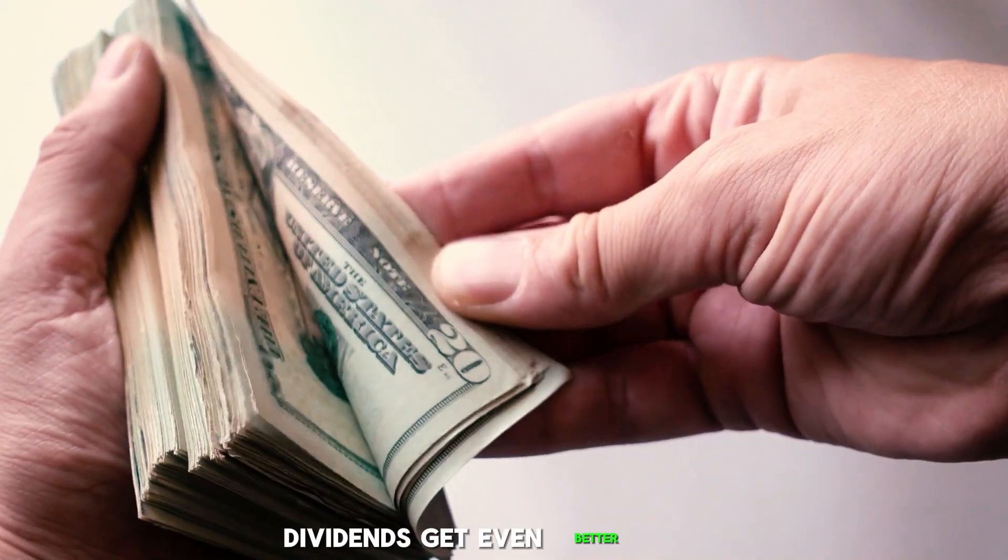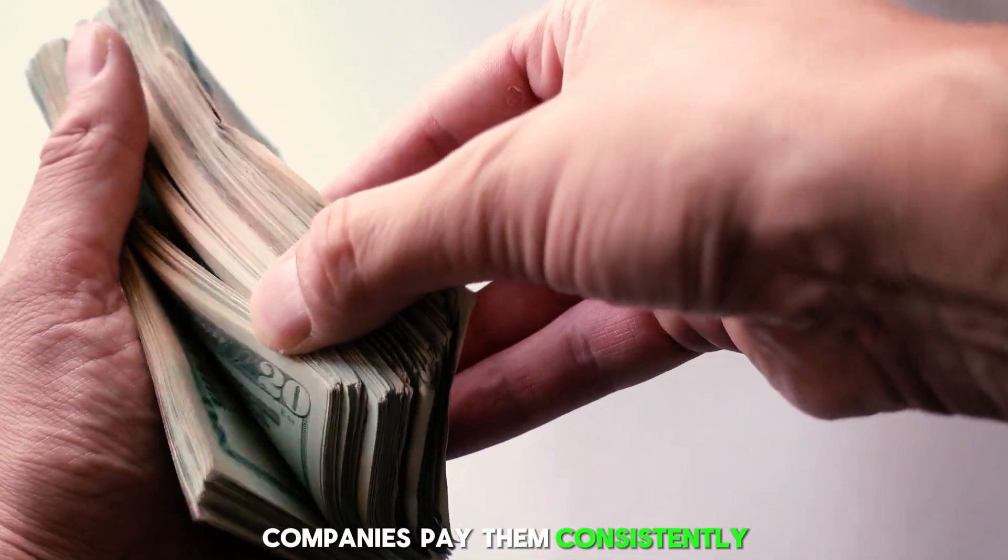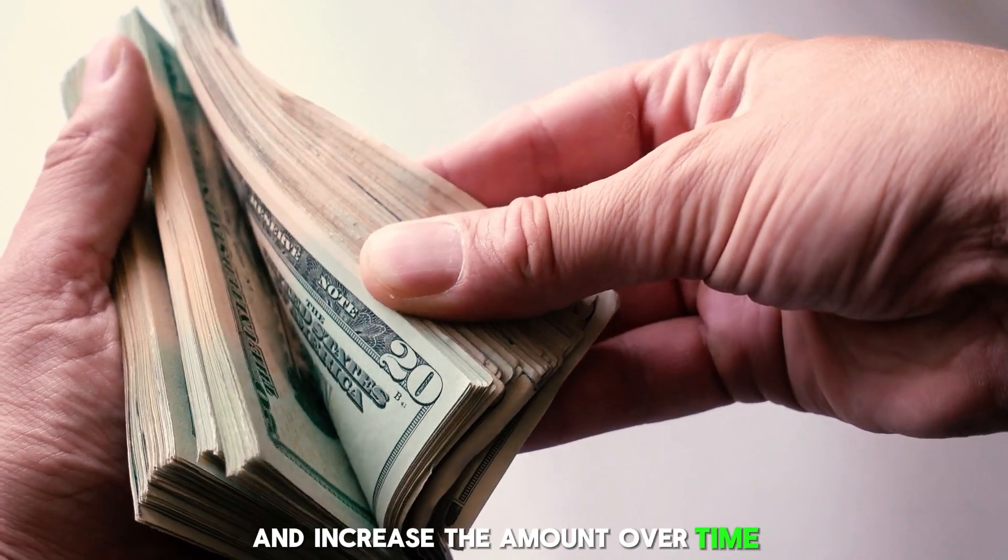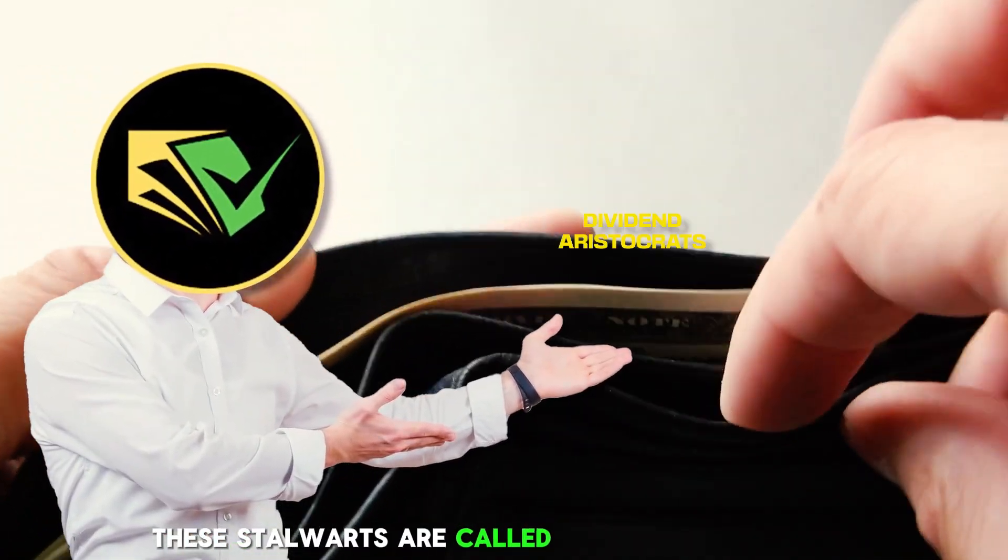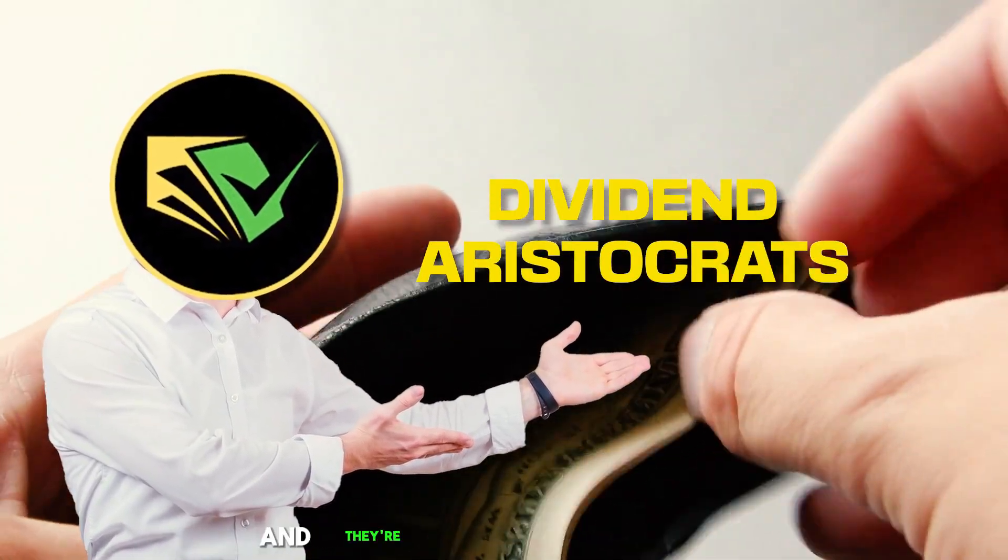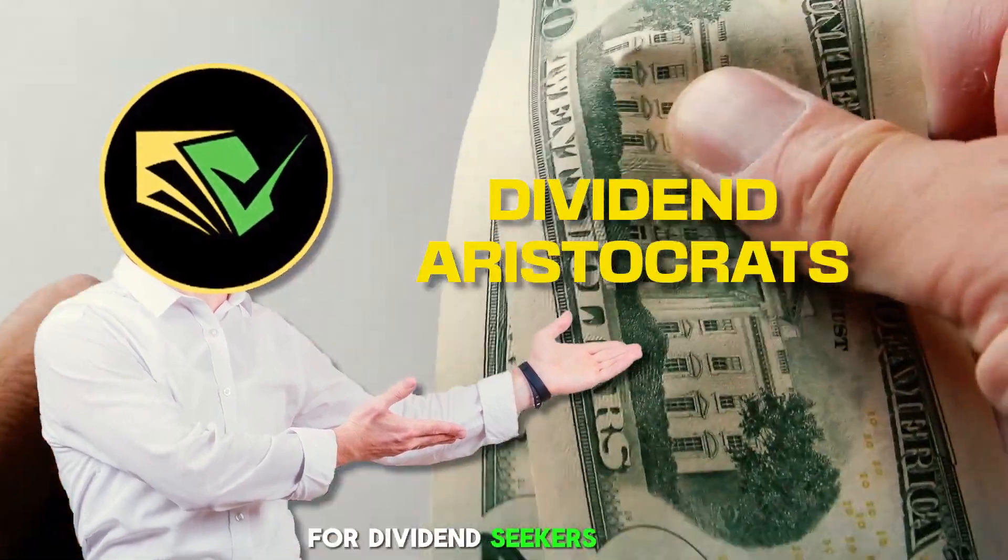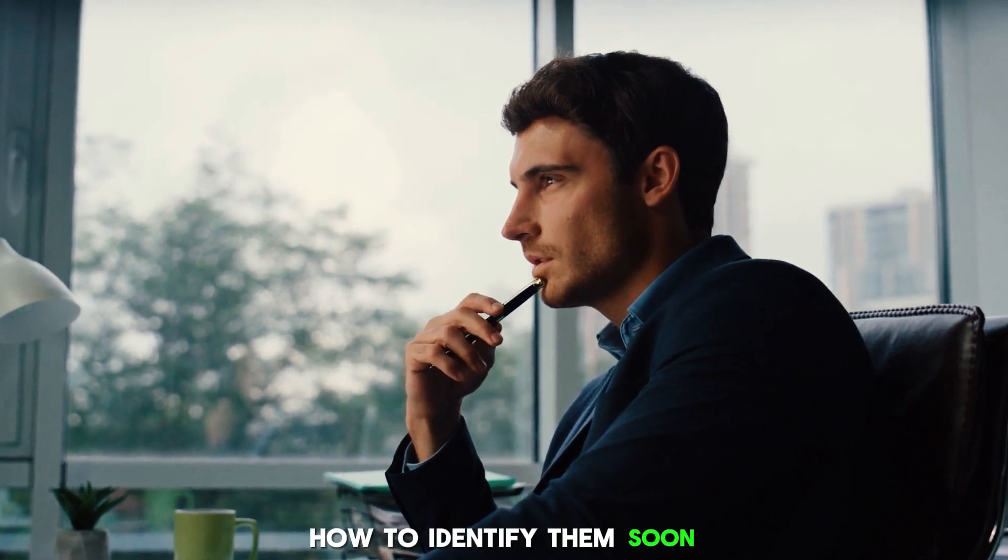Dividends get even better when companies pay them consistently and increase the amount over time. These stalwarts are called dividend aristocrats, and they're the creme de la creme for dividend seekers like us. We'll definitely be talking more about how to identify them soon.